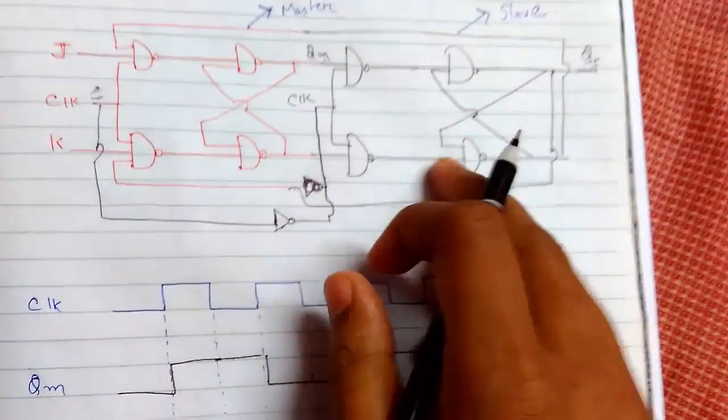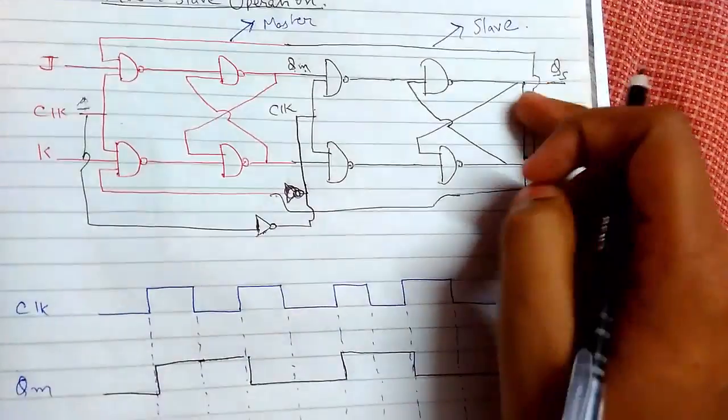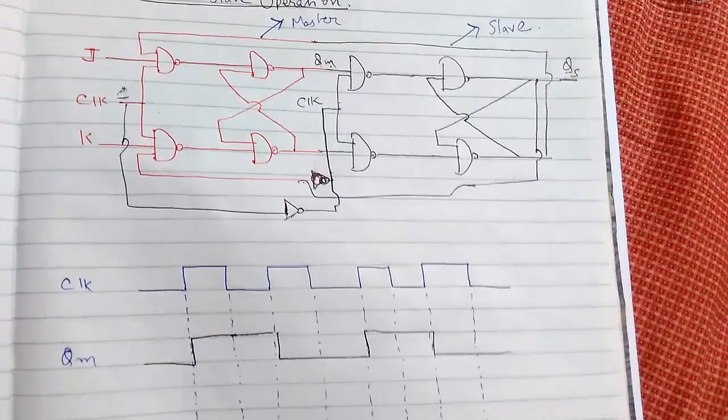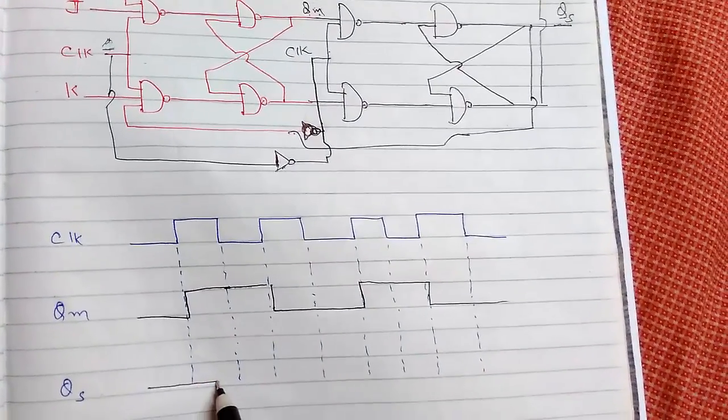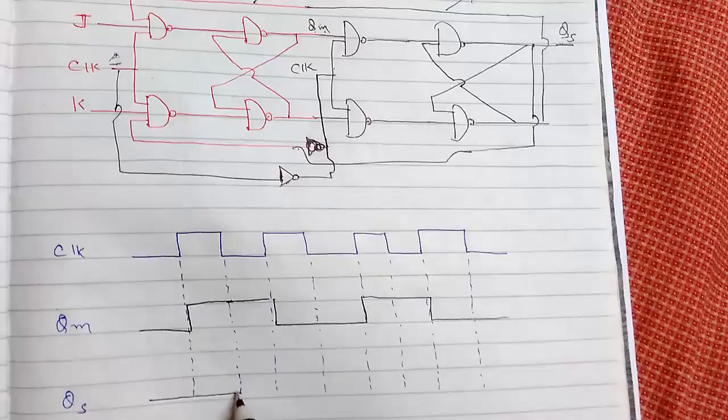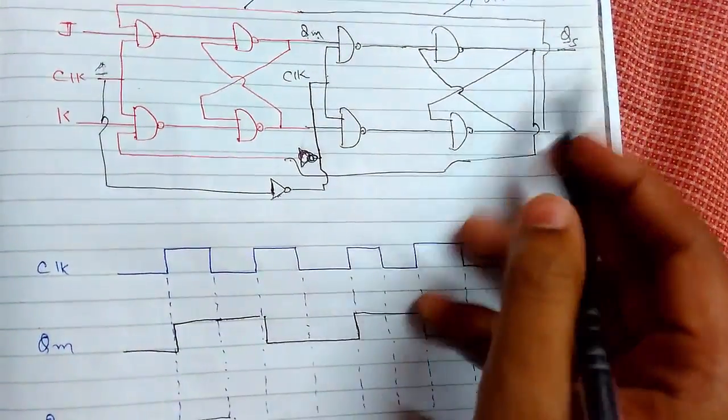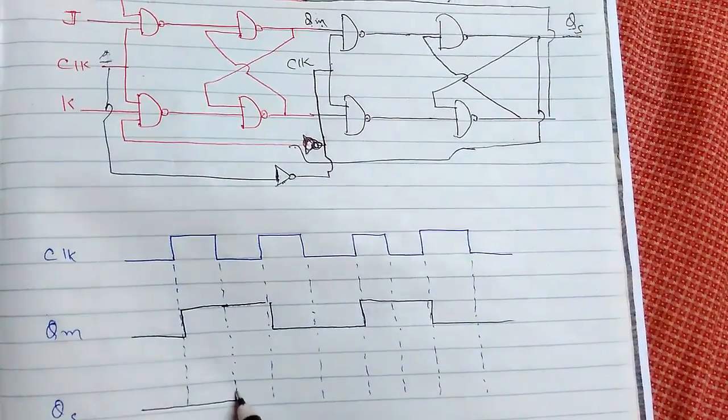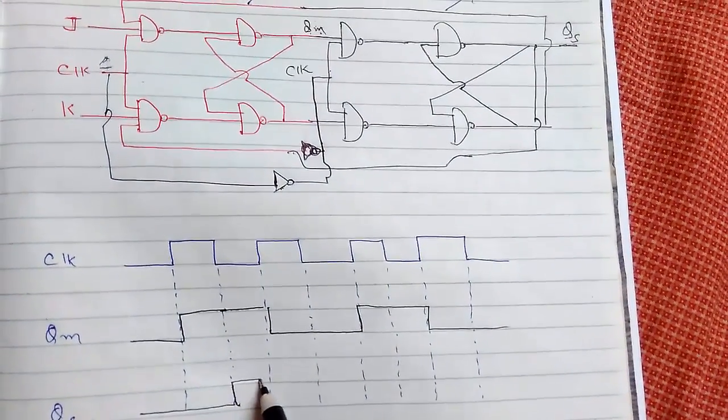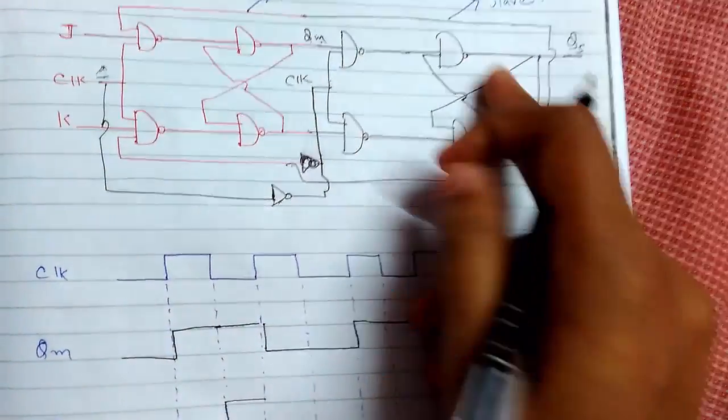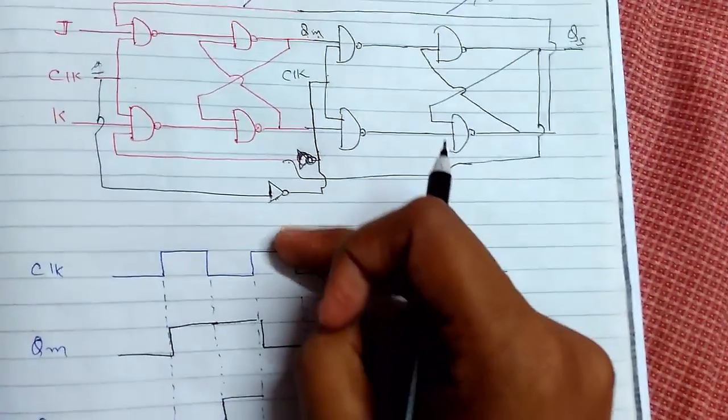Now let us see how the slave will operate. The output of this part will operate. Suppose when it was zero, it will keep on this zero. Now the clock is zero, so this part is operating. It will go high and it will remain high for this also, because now the previous value is getting stored here because this clock will be operated when at the low level.